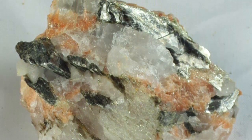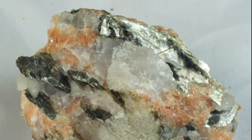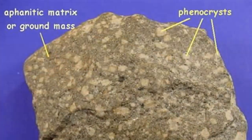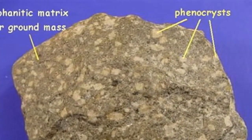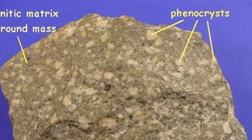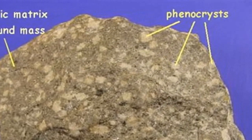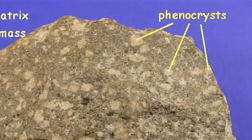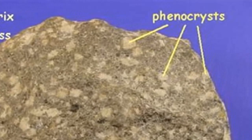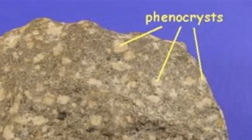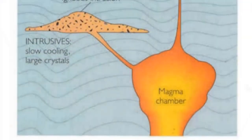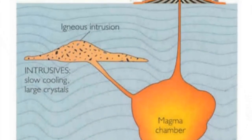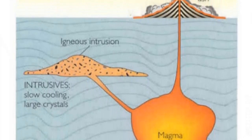If magma containing some large crystals should change environments, for example by erupting at the surface, the remaining liquid portion of the lava would cool relatively quickly. The resulting rock, which has large crystals embedded in a matrix of smaller crystals, is said to have a porphyritic texture.